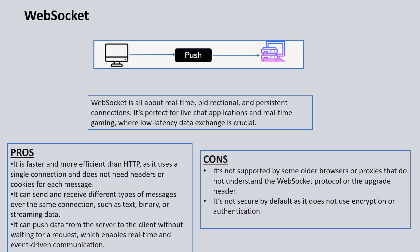Next is WebSocket. You can think of a chat application — whenever you need a real-time, bi-directional, and persistent connection, we use WebSocket. In chat applications, you need a connection between clients so they can talk to each other at any time, making it perfect for live chat applications and real-time gaming. The main benefit of the WebSocket pattern is that it is faster and more efficient than HTTP because it uses only a single connection and doesn't require headers or cookies for each message. At the same connection, it can handle text, binary, or streaming data, and it can push data from the server without waiting for a client request, enabling single-connection, real-time, event-driven communication.